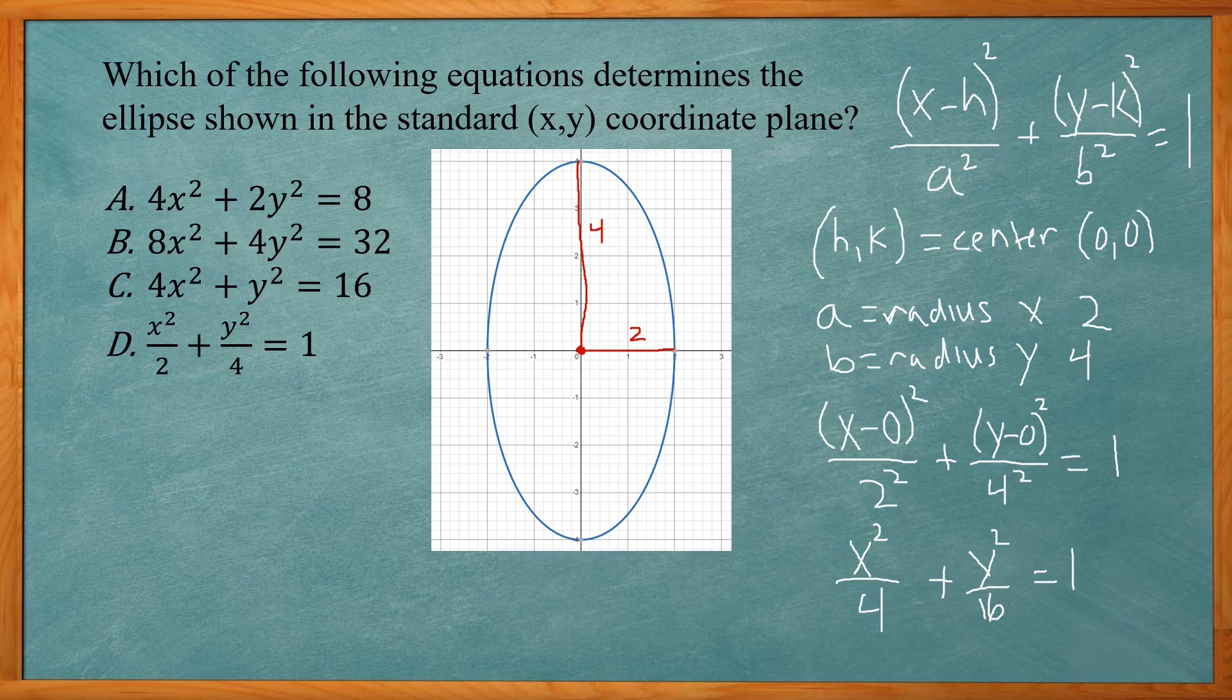Alright, so that's our equation of the ellipse. If we look at the answer choices, it does not match what we have. D is close, but it doesn't have the same a and b values. If we look at answer choices A, B, and C, those don't have any denominators, no fractions. So let's change our formula so it doesn't have any fractions.